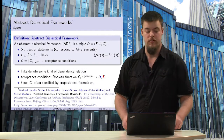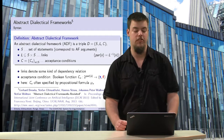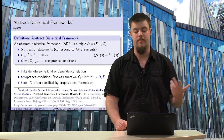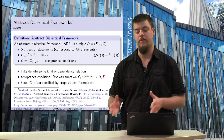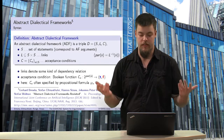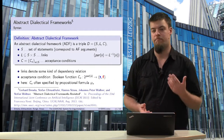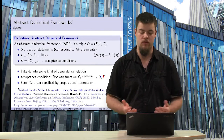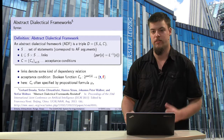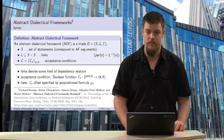Now we can go further to abstract dialectical frameworks. Here we have a triple of a set of statements, a set of links, and a set of acceptance conditions, where each acceptance condition is associated with exactly one statement. Those links denote some kind of dependency relation; one statement has different parents with respect to this dependency. The acceptance condition is defined as a Boolean function mapping the power set of all parents to the truth values true and false. Because this is the same as a truth table for a propositional formula, acceptance conditions can be specified with propositional formulas.